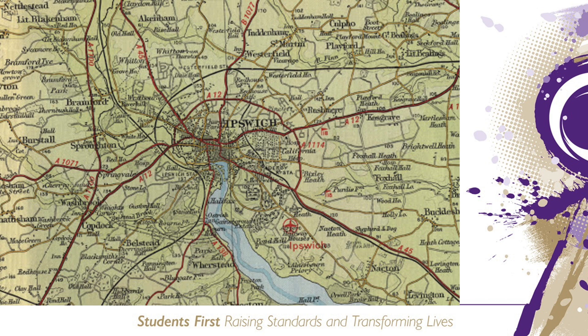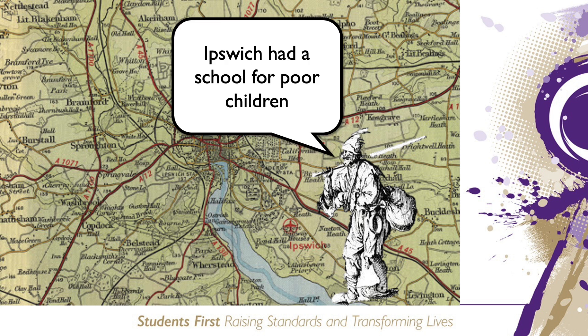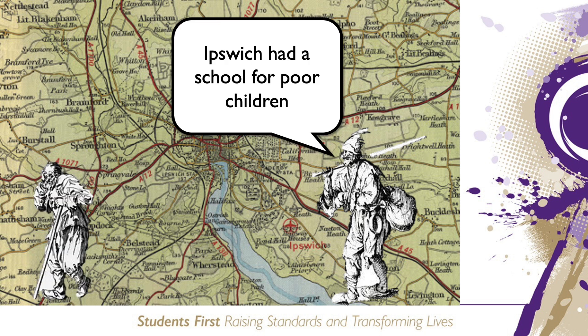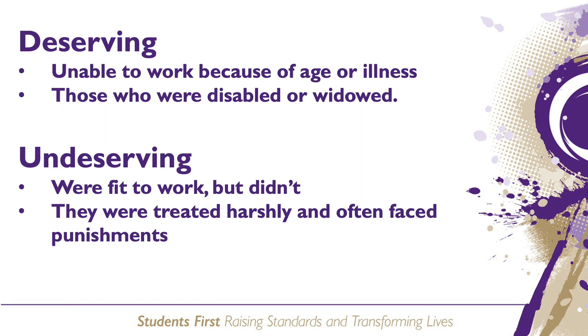It is important, however, to recognise that some areas of the country were doing much better at dealing with the issue of poverty and poor relief. Ipswich, for example, established a school for poor children and a hospital for those who were poor because they were sick.